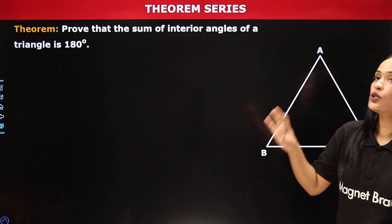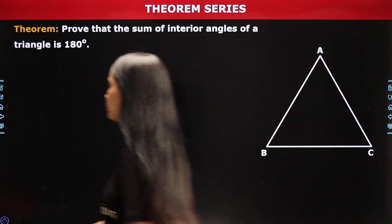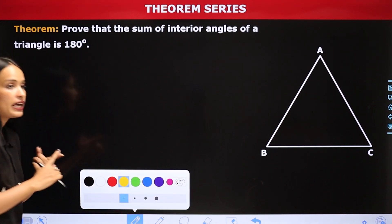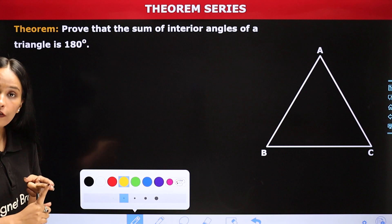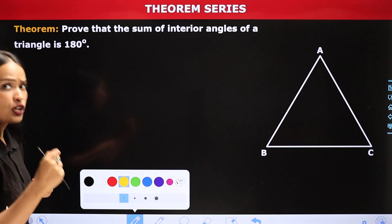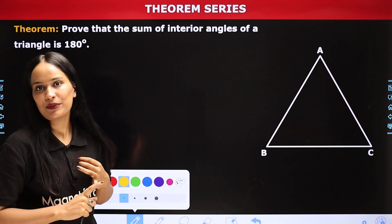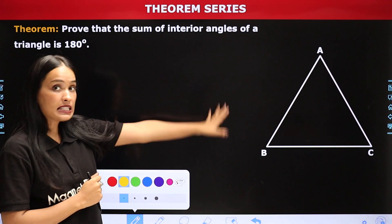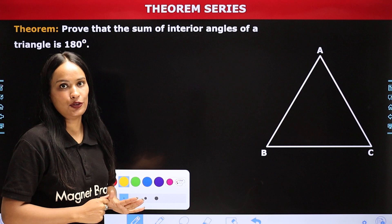अब मुझे इस theorem को prove करना है। Theorem को prove करने का एक तरीका होता है — जैसे आप लिखते हो कि आपके पास क्या given है, क्या prove करना है, अगर construction किया है तो construction की steps भी लिखते हो, और उसके बाद proof present कर देते हो। Plus diagram — अगर diagram जरूरी है तो definitely diagram भी बनाते हो।